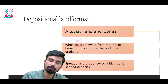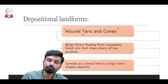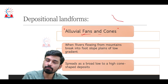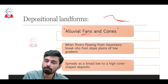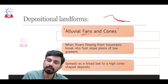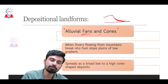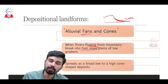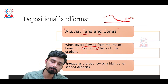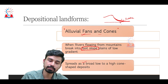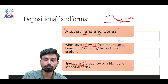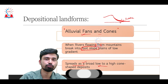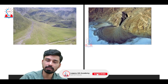The most important depositional landform in the middle course is called alluvial fans and cones. These features form immediately when the river comes out from the mountainous area and enters the plain area. When the river enters from mountain to plain, there is a sudden decrease in gradient, causing a sudden decrease in flow velocity. The river then starts depositing sediments all around itself, and these sediments spread out in a broad fashion in the form of a low to high cone-shaped deposit.